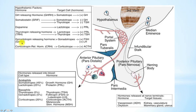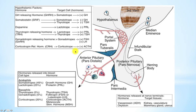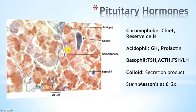The last hormone on our list is CRH, which is released from the paraventricular nuclei. It acts on the corticotrophs, which fall under the basophil category, and they release ACTH. The ACTH then acts on the adrenal cortex.